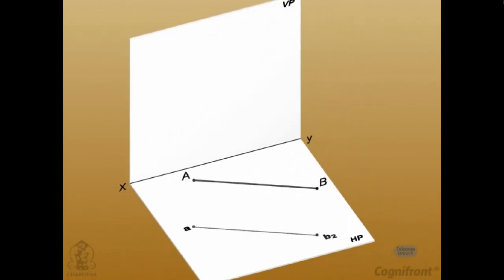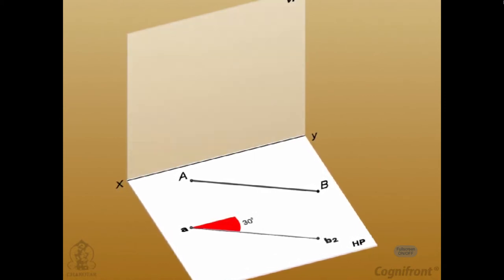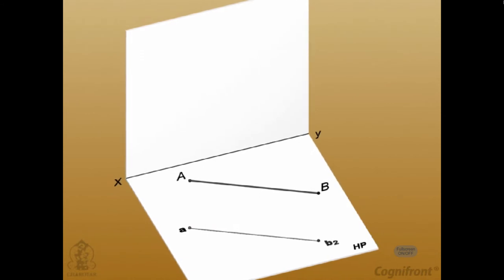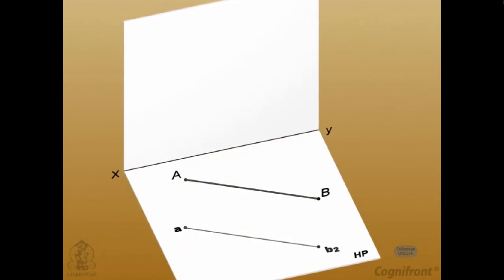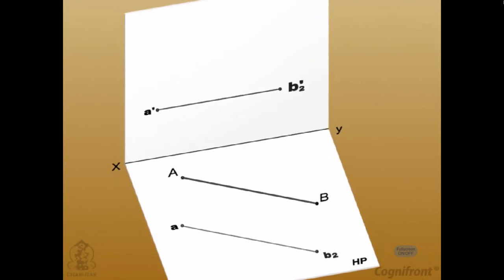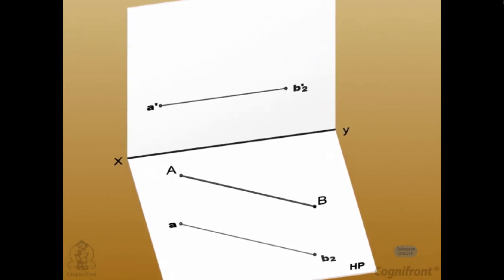Observe line AB2 is the top view making an angle 30 degrees with VP. Since the line is now assumed to be parallel to HP, its front view is a line A-B-2 parallel to XY.